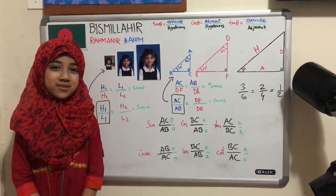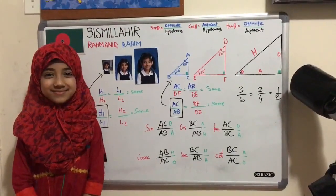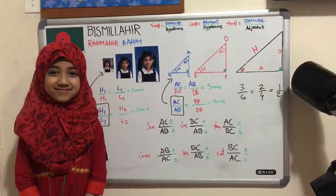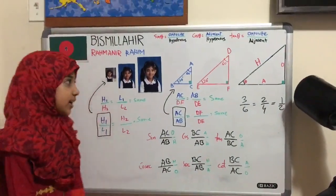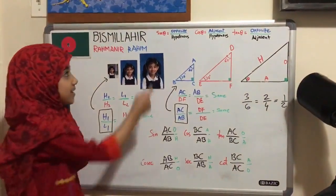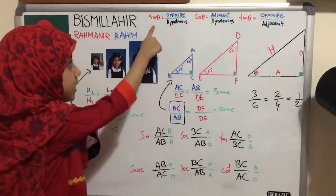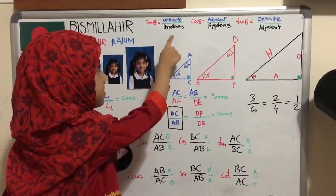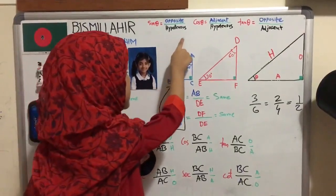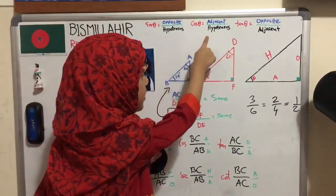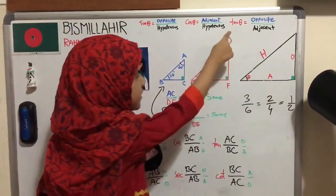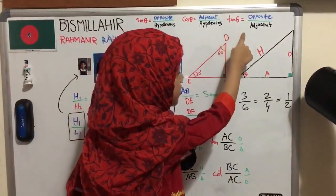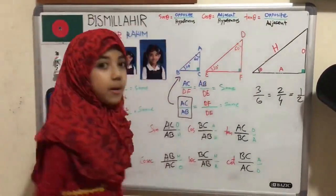Assalamualaikum warahmatullahi wabarakatuh. Welcome to Mathmagic. We all know that sin theta equals opposite by hypotenuse, cos theta equals adjacent by hypotenuse, and tan theta equals opposite by adjacent.